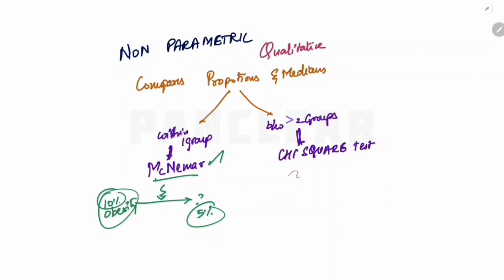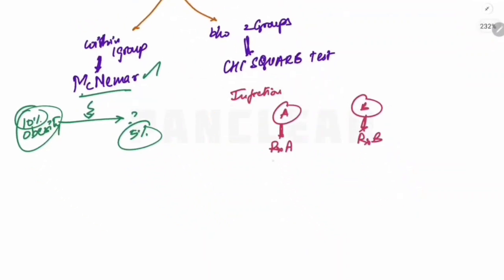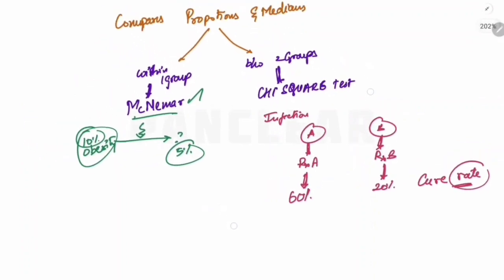Whereas the chi-square test is used more often to compare proportions between two groups. For example, one infection: group A uses drug A and group B uses drug B. After treatment, we look at the percentage of people cured — that is the cure rate, which is a proportion. To compare these two groups, we use the chi-square test.